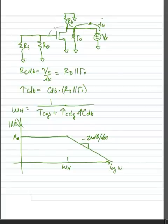One problem we note is that the capacitance going between the drain and the gate was quite difficult to handle. In the next part of the lesson, we will learn how to deal with that in a much simpler solution using what we call Miller's Theorem.